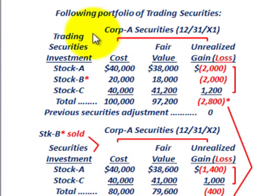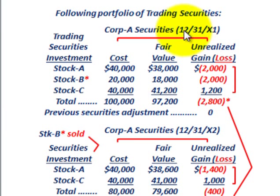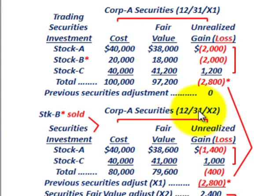Trading securities are securities being held as an investment by the company that can be sold at any time. We're going to look at two different years and deal with these trading securities at the end of each reporting period — 12/31/X1 and 12/31/X2 — when we determine any adjustments we have to make to our fair value.